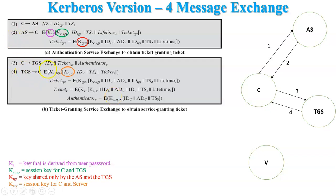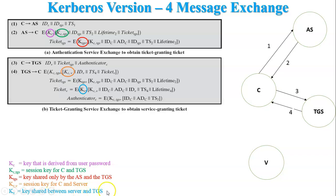In the fourth step, TGS replies to the client with a message encrypted using Kc,tgs. When the client decrypts this, it gets Kcv — the session key for the client and server V — along with ID_V, timestamp TS4, and ticket_v. Ticket_v is encrypted using Kv, the key shared between the server V and TGS, so the client cannot decrypt it. The client accepts this ticket and will send it to server V.